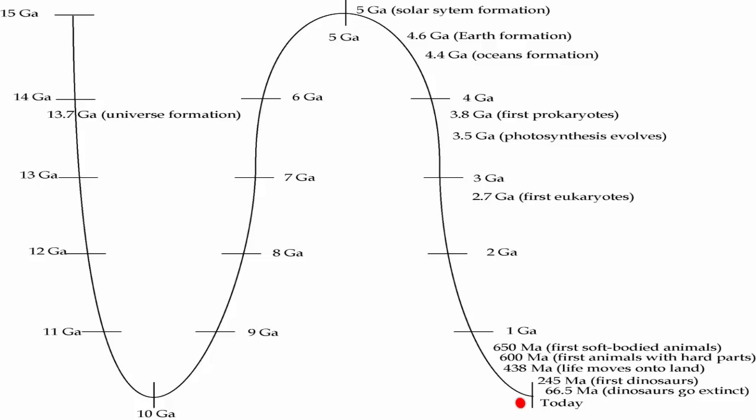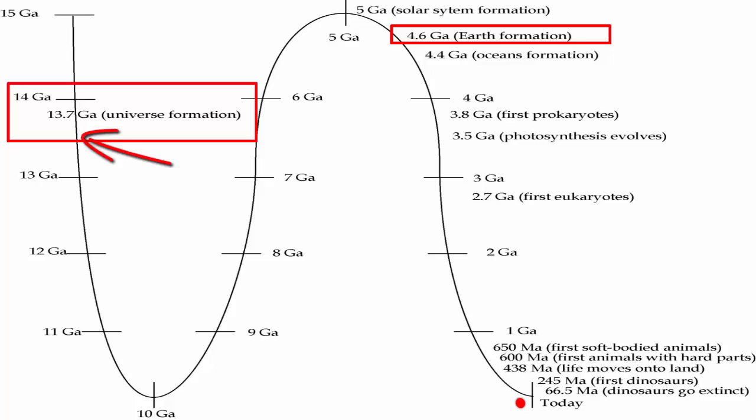This scaled timeline highlights key events that have happened since the formation of our universe 13.7 billion years ago. Note the 4.6 billion year age of Earth's formation means it happened a long time after the universe formed. The dot here at the bottom represents today.